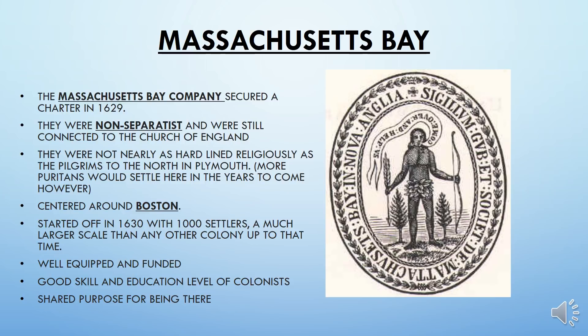Later on, the Massachusetts Bay Company entered the mix, securing their charter in 1629. They were non-separatists and were still connected to the Church of England, which separated them initially from the Pilgrims. They weren't as hard-nosed religiously as the Plymouth Colony, but many Puritans would settle here in years to come. Plymouth would eventually be absorbed by Massachusetts Bay. The main center was Boston, starting in 1630 with about a thousand settlers — a much larger colony, well-equipped, well-funded, with a diverse range of skills and a shared purpose.